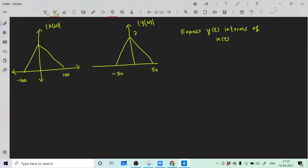Hello everyone, let us start a problem of Fourier transform. We have x(ω) as given value 1, a triangle with width of 200 that is even. We have y(ω) from -50 to 50 with amplitude 3, and we need to express y(t) in terms of x(t).